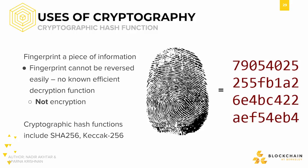Cryptographic hash functions are used to fingerprint a piece of information. This is done through pre-image, second pre-image, and collision resistance, as explained in our previous course, Bitcoin and Cryptocurrencies.